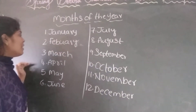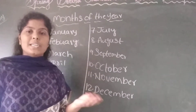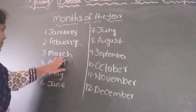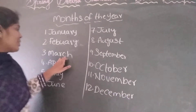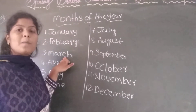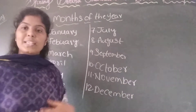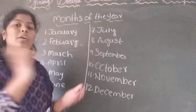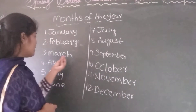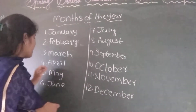Leap year comes after every 4 years. March is the blossom of the year — the blossom of the greenery. In March, when we observe our surroundings — trees, plants, animals — everything is in full blossom. April.